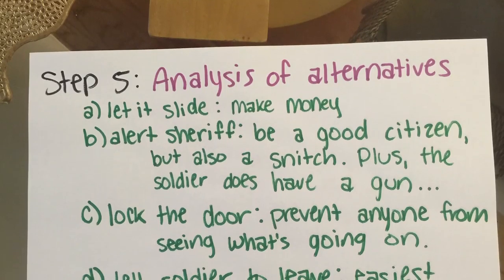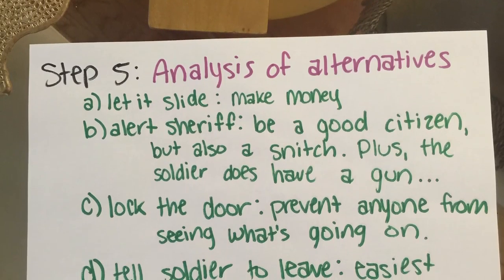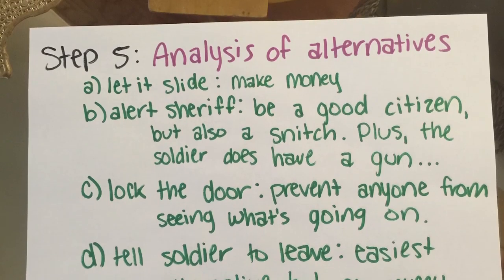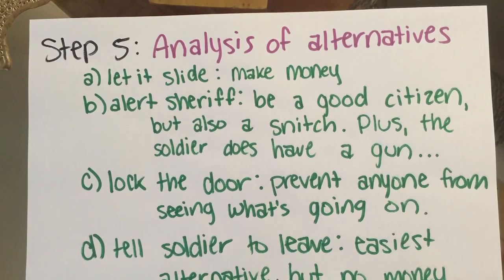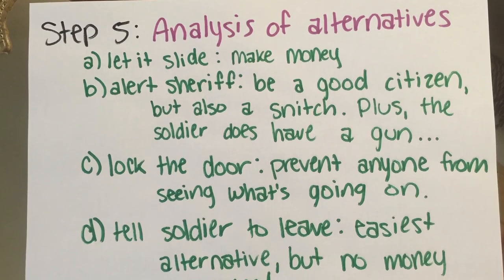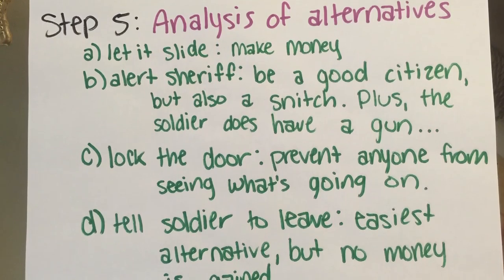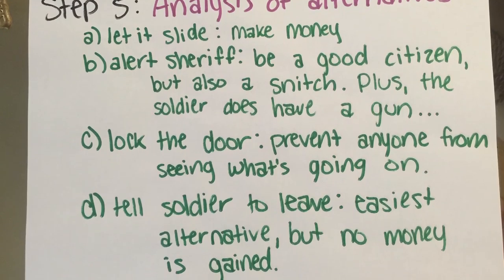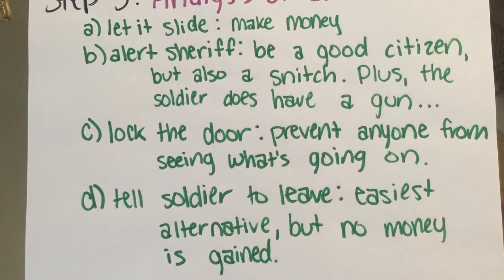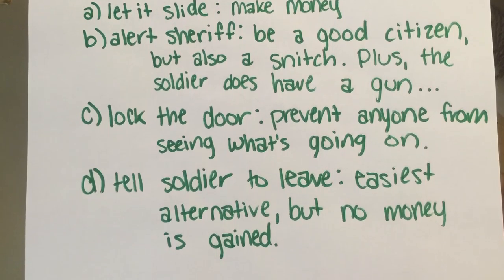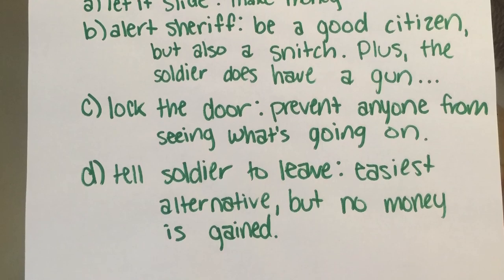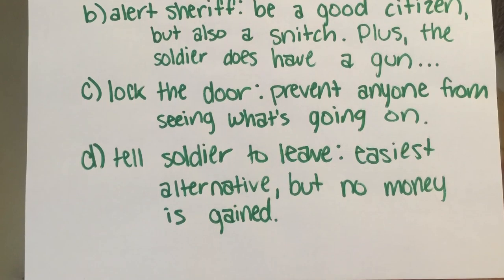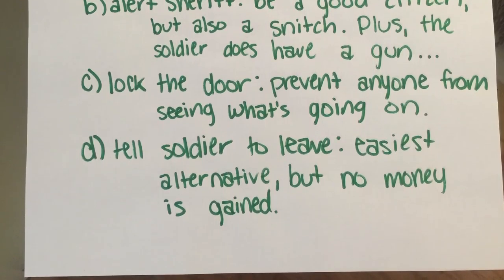Step 5: Analysis of alternatives. He could let it slide and make money, he could alert the sheriff to be a good citizen, he could lock the door to prevent anyone from seeing what's going on, or he could tell the soldier to leave — the easiest alternative, but no money is gained.